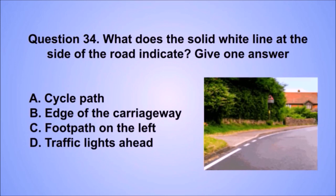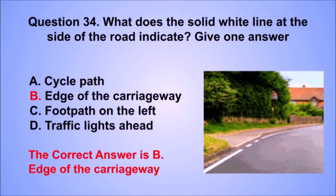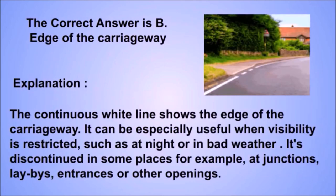Question 34. What does the solid white line at the side of the road indicate? The correct answer is B: Edge of the carriageway. The continuous white line shows the edge of the carriageway. It can be especially useful when visibility is restricted, such as at night or in bad weather. It's discontinued in some places, for example at junctions, lay-bys, entrances or other openings.